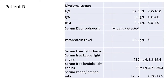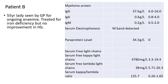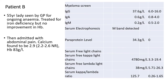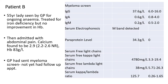So let's get straight into patient B. It's a 55 year old lady who's seen by her GP for ongoing anemia. She's been treated with iron tablets but has shown no improvement in her haemoglobin — quite commonly seen. She's then admitted with abdominal pain. Calcium is high at 2.9, and her haemoglobin is pretty low at 83. Her GP had sent a myeloma screen. Have a quick look at the screen — is this myeloma?